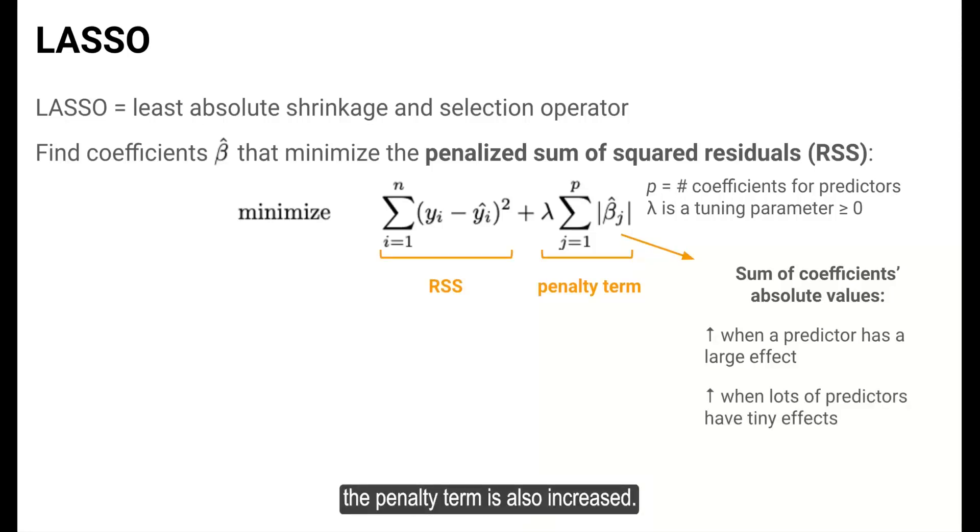More importantly, the penalty term is also increased if we have a lot of predictors with really tiny effects. It turns out that the LASSO method shines for this second reason. Let's dig a little deeper as to why.